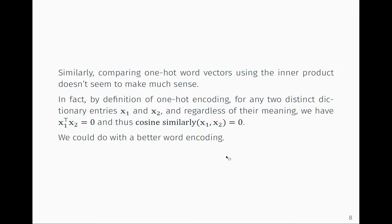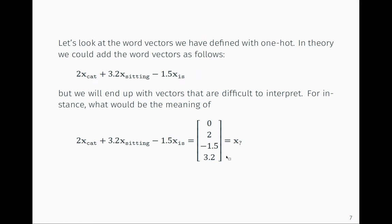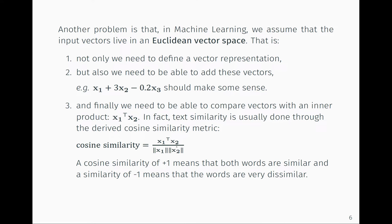A side note: when comparing words, what people typically use is cosine similarity. It's the scalar product divided by the norms of the two vectors — essentially the angle between the two vectors in that space. A cosine similarity of +1 means the two vectors are identical, and a similarity of -1 means they are very dissimilar. It's a number between minus one and one.